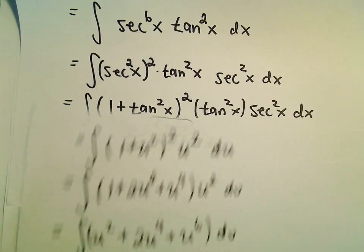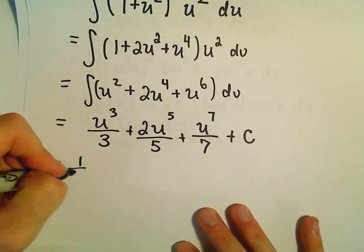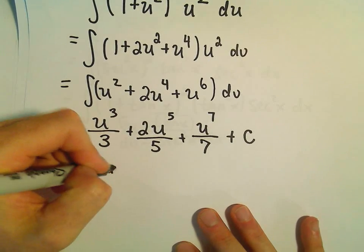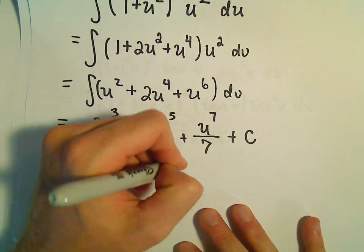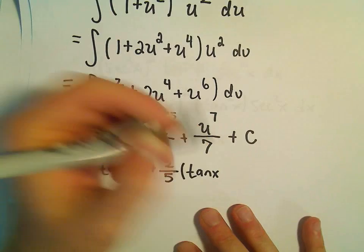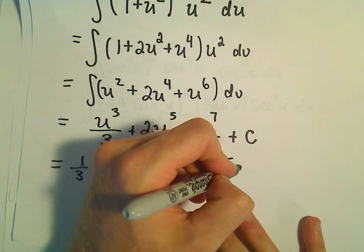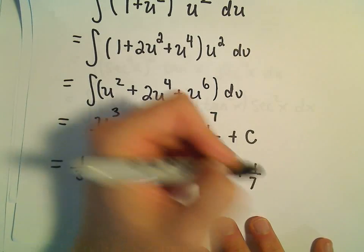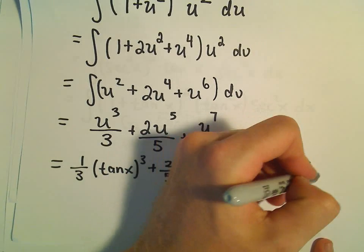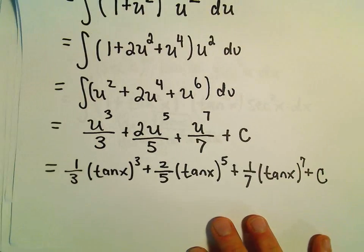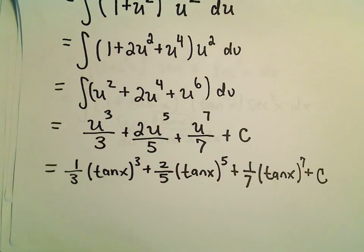We said that u equals tangent x. So we have one-third times tangent x cubed, plus two-fifths times tangent x to the fifth, plus one-seventh tangent x to the seventh, plus C. And we've now got our antiderivative.